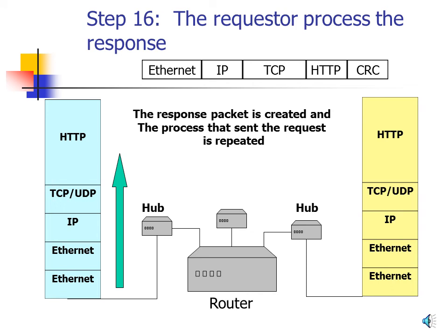Step 16: The Requester Processes the Response. The response from the server arrives at the client's Ethernet connection. The Ethernet program performs its checks and passes the IP packet up to IP; IP processes it and passes it to TCP; TCP continues processing and passes it up the stack. Finally, the resulting HTML payload is given to the web browser and displayed on the client computer as the web page.